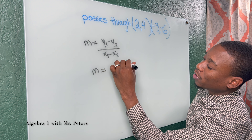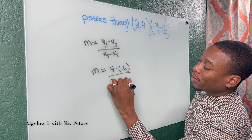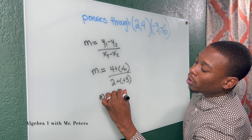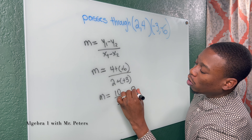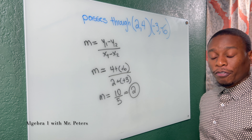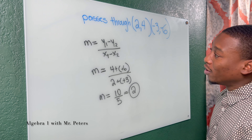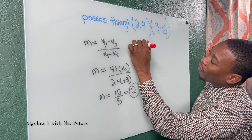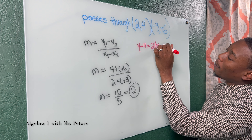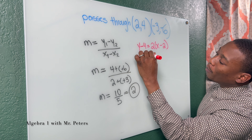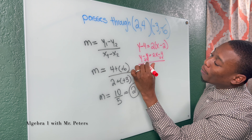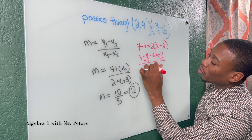Four minus negative six, all over two minus negative three. Once we simplify this, we're going to get M is equal to 10 over five, and we'll simplify this one more step to two. Now that we have that done, we can use the point-slope formula to figure out what exactly is the equation. So let's use it with this point. So I have Y minus four is equal to two times X minus two. Simplifying: Y minus four is equal to two X minus four. Once I add four on both sides, my final equation would be Y is equal to two X.